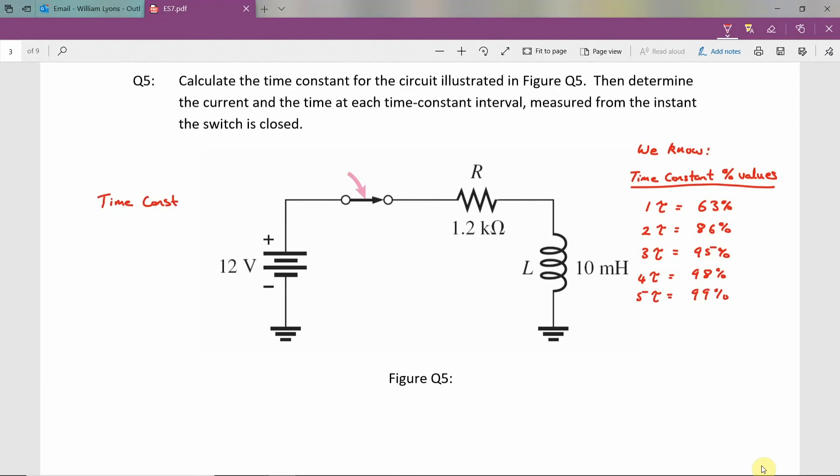So in order to answer this question, we have to calculate the time constant τ, what the final current IF will be, and then we're going to calculate the instantaneous current I at 1τ, 2τ, 3τ, 4τ, and 5τ.